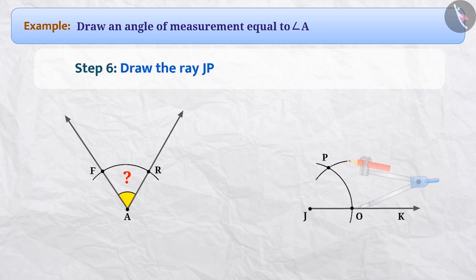Step 6: now we will connect point J to point P and draw the ray JP. This gives us angle J which is equal to angle A.